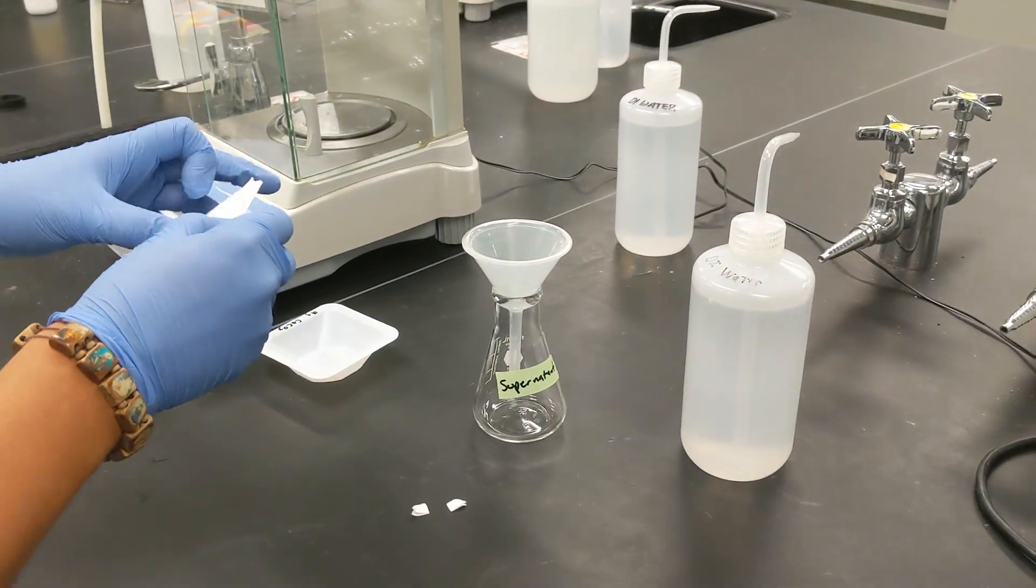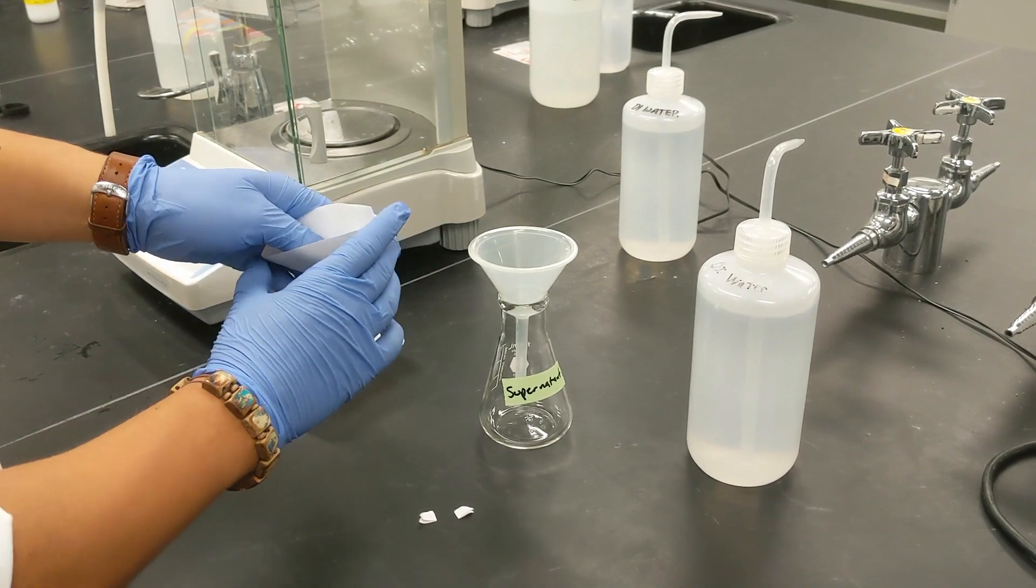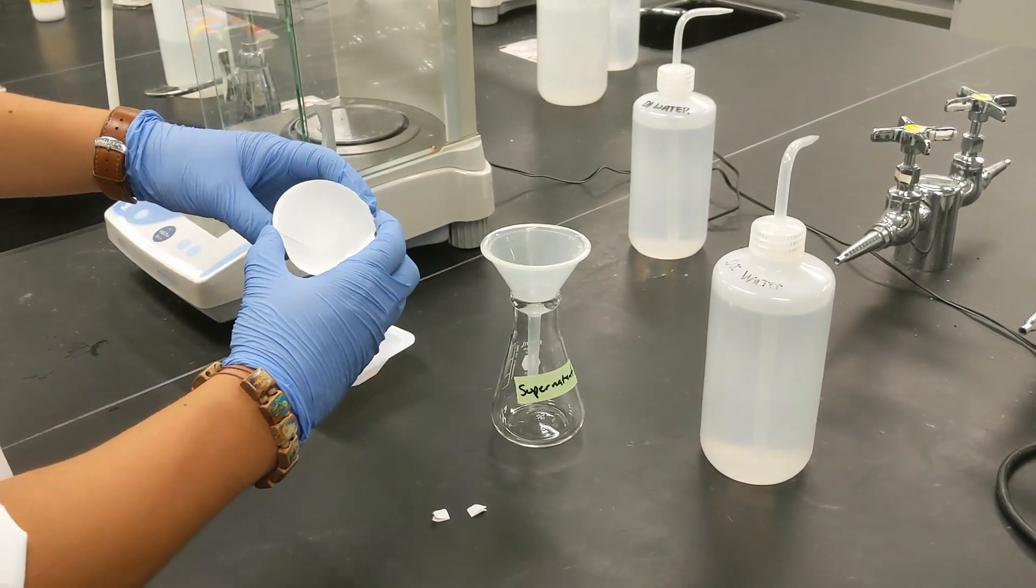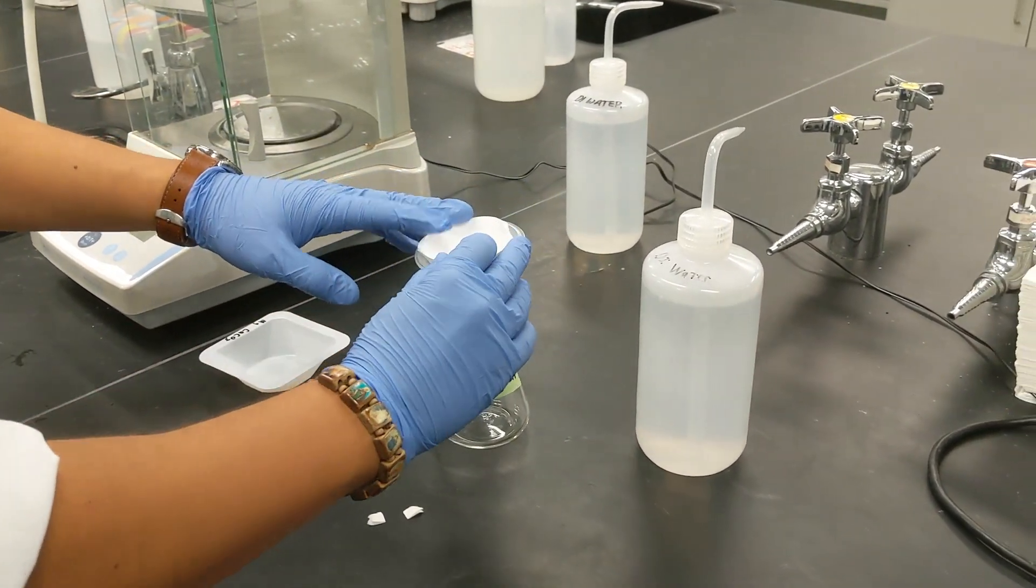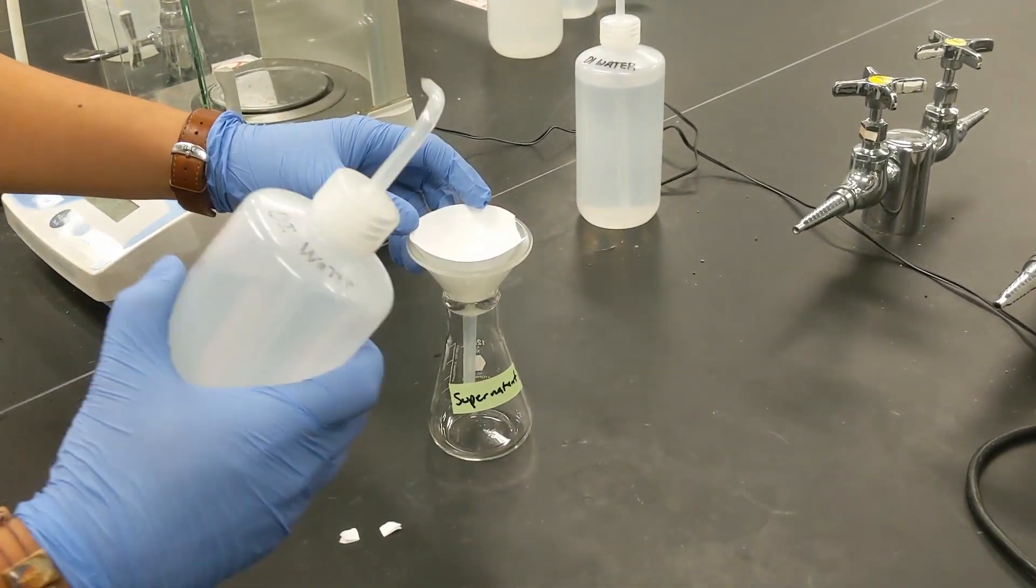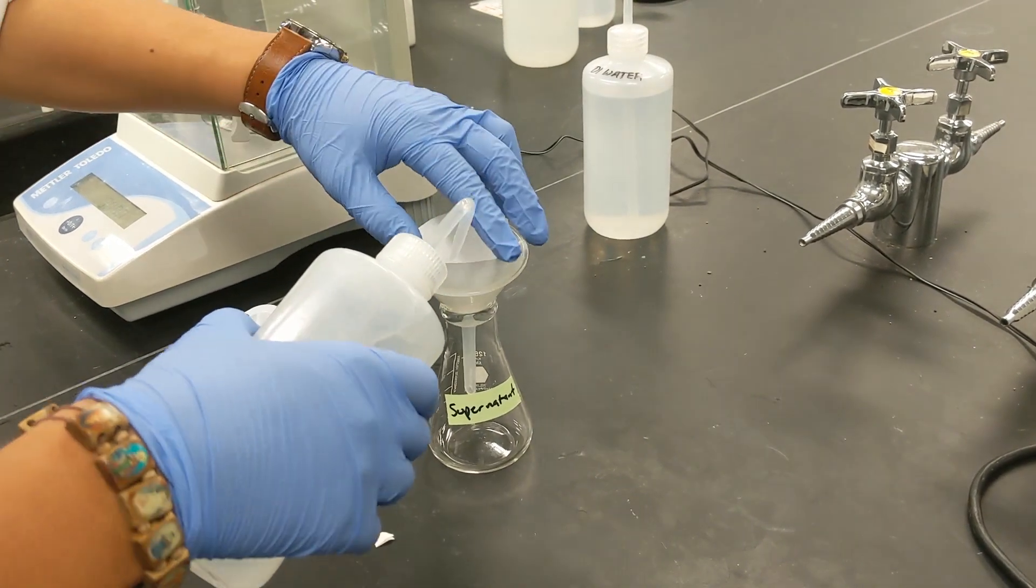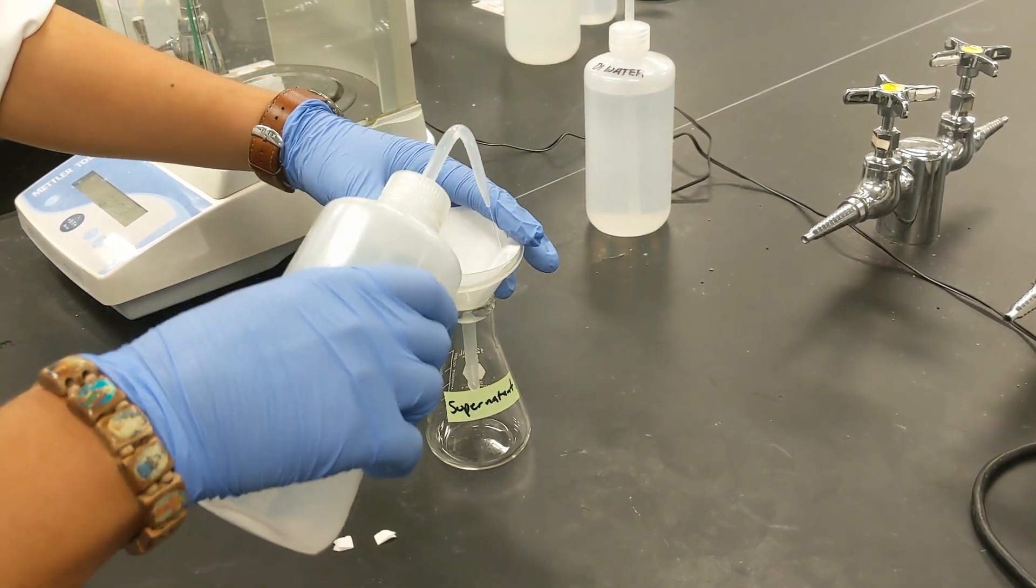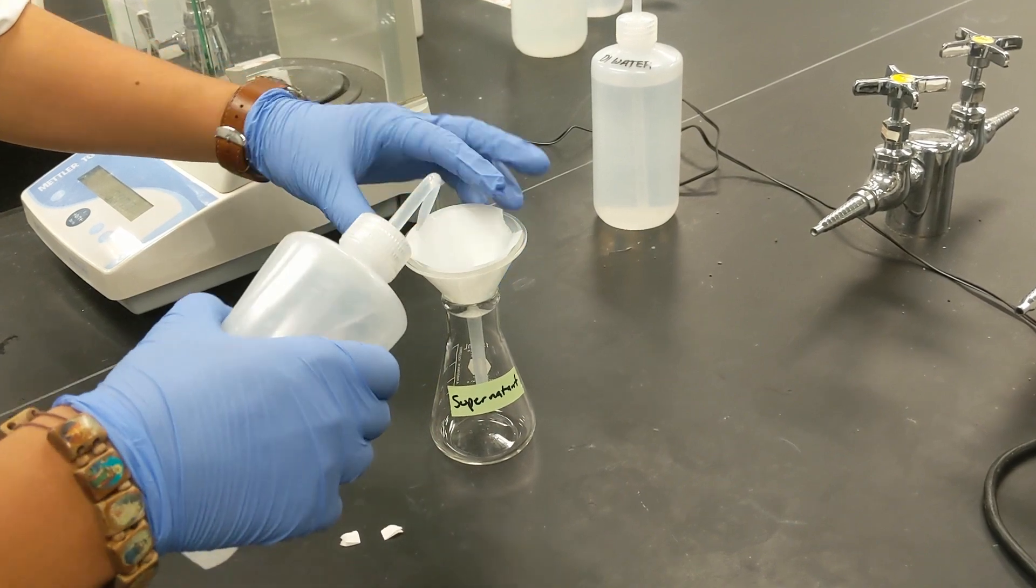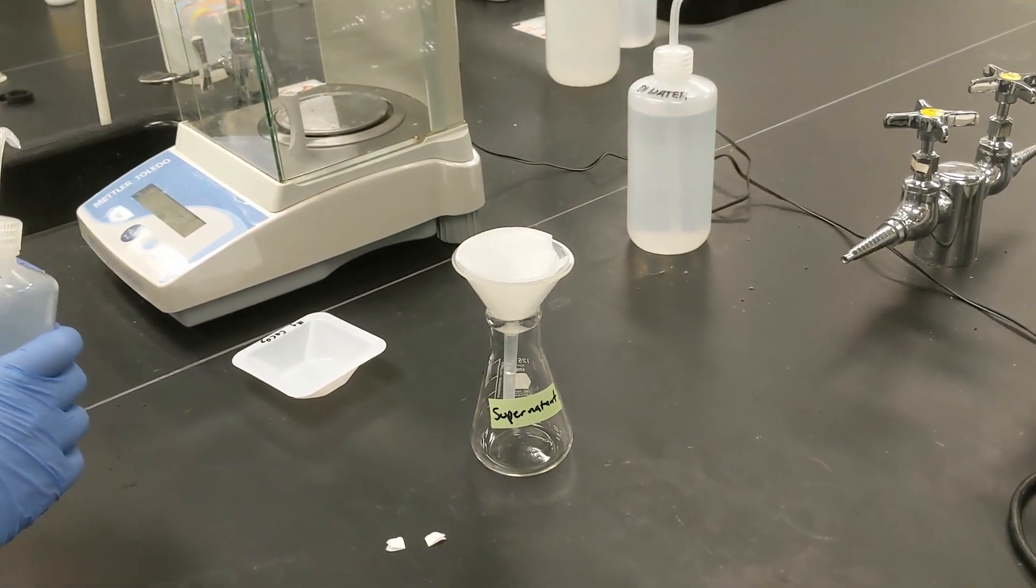And then now with our filter paper we can form a little funnel by just opening it up, placing this into the filter and then we can seal the sides of the filter paper with some DI water just to get it to stick to the side so that it stays flat. And now our filtration device is ready to go.